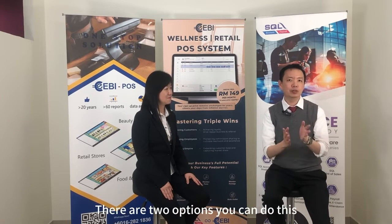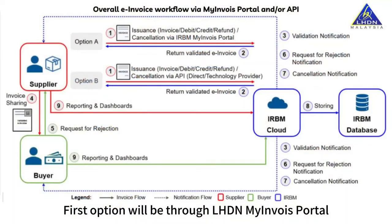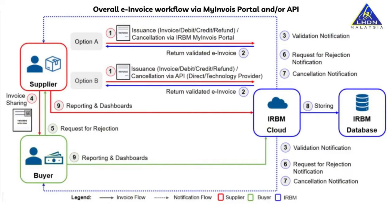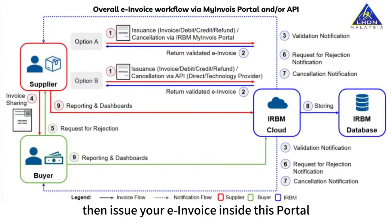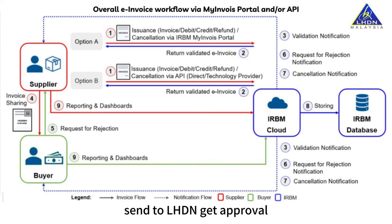There are two options you can do this. The first option is through the LHDN My Invoice Portal. You can go into this portal, issue your e-invoice inside this portal, send it to LHDN, get approval, and then send it to your customer.